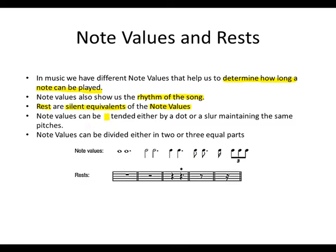Note values can be extended either by a dot or a slur, yet maintaining the same pitch. So if we have a semi-breve that is a C, then I can add a slur to the next bar, but it must be a C as well, because it must maintain the same pitch. Also, note values can be divided either in two or three equal parts.